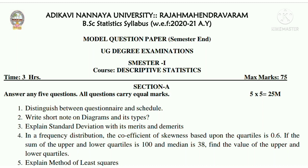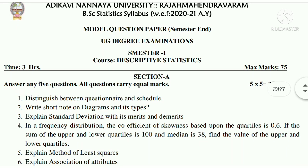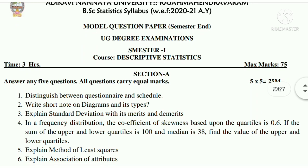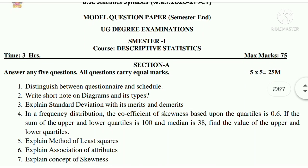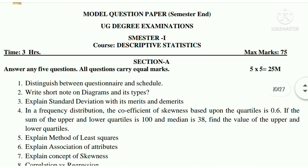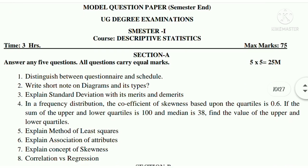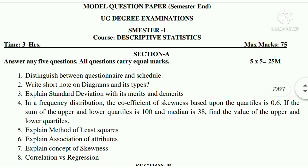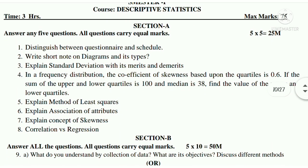Fourth: in a frequency distribution and so on. Fifth: explain methods of least squares. Sixth: explain association of attributes. Seventh: explain concept of skewness. Eighth: correlation versus regression.